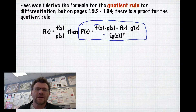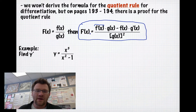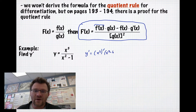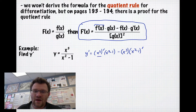You're going to be using it quite a bit in upcoming lessons. Here's our example: find y prime if y equals x cubed divided by x squared minus 1. To find y prime, we write the x cubed part in brackets with a prime — we take the derivative of the top and multiply it by the bottom, which is x squared minus 1. Then we subtract the top, x cubed, multiplied by the derivative of the bottom, x squared minus 1 prime. All over the bottom squared.